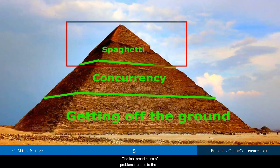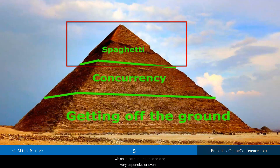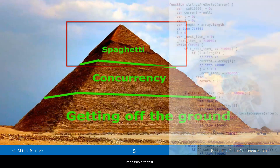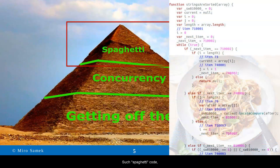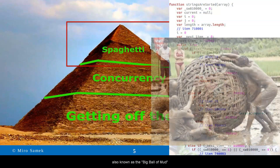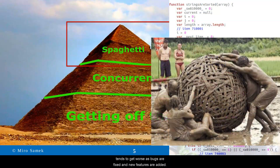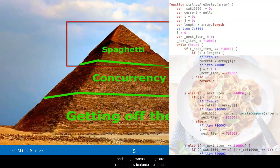The last broad class of problems relates to particularly convoluted code structure, which is hard to understand and very expensive or even impossible to test. Such spaghetti code, also known as the big ball of mud, tends to get worse as bugs are fixed and new features are added. This class of problems is best addressed by proper software design, and I will discuss it in the segment about state machines.